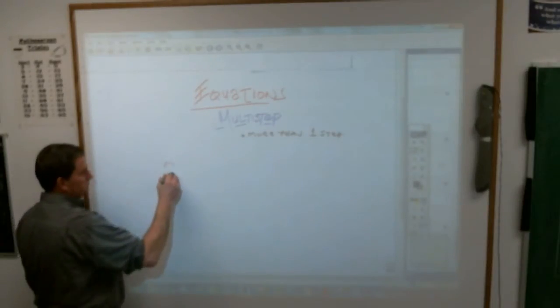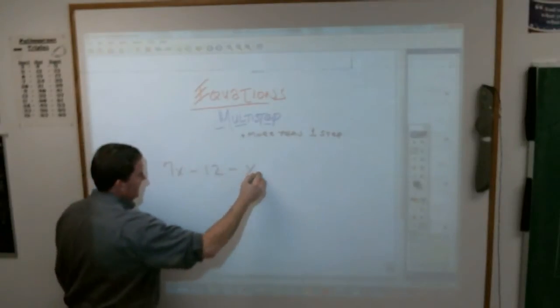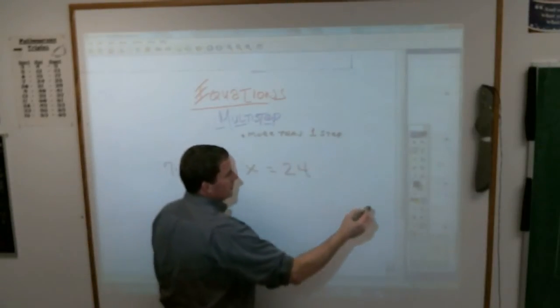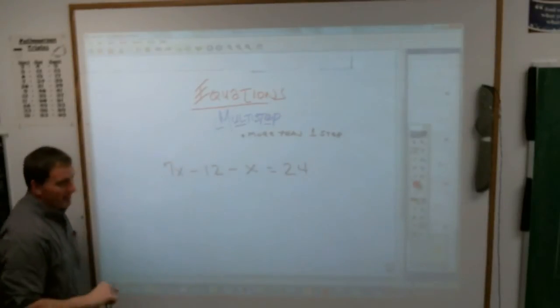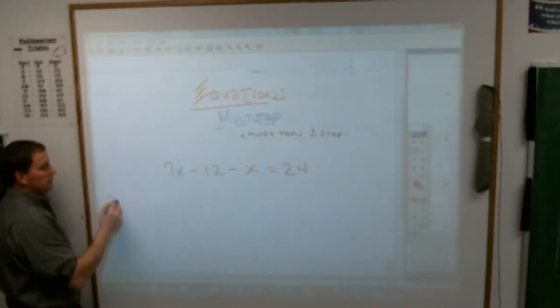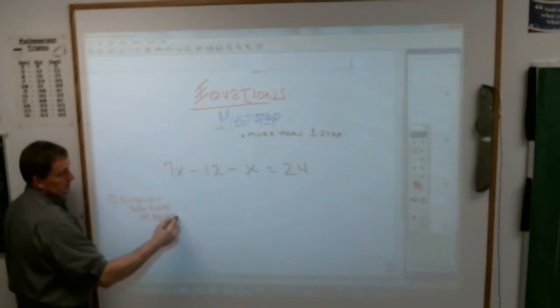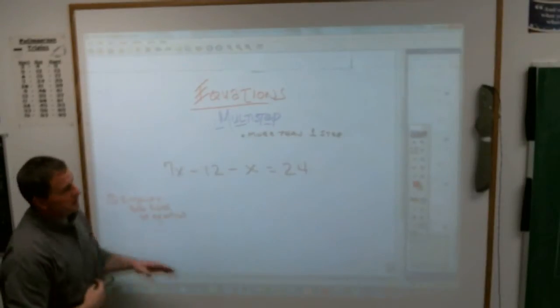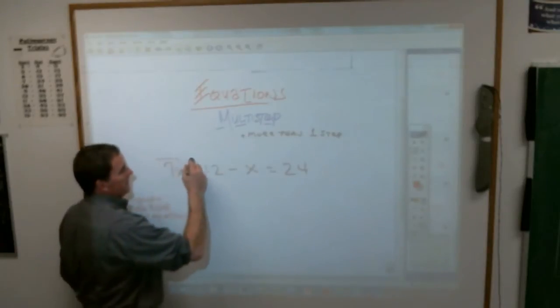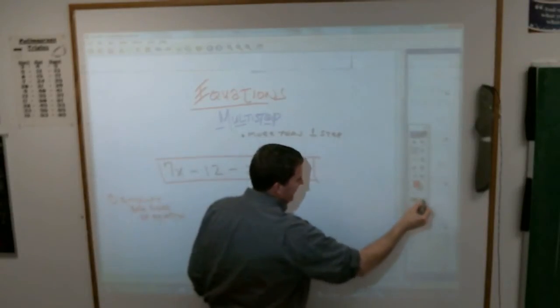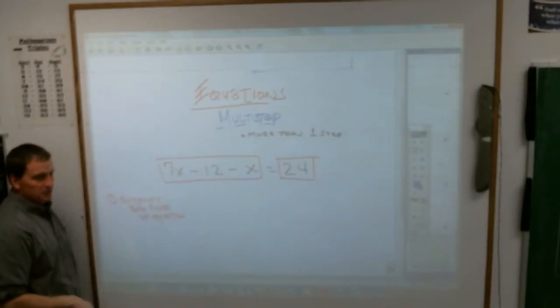Here is an example of a multi-step equation. 7x minus 12 minus x equals 24. Now when you come up to an equation that looks like that, people, the first thing you have to do is you must, you must, you must simplify both sides of the equation. You always look at the equal sign as splitting the thing into its parts here. You need to look at the left side, and you need to look at the right side. And you need to say, can I combine any like terms?